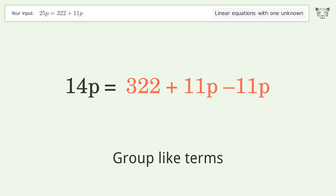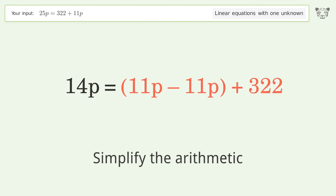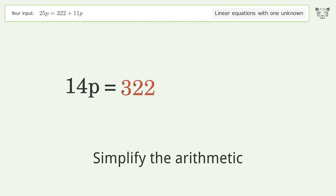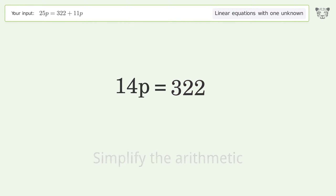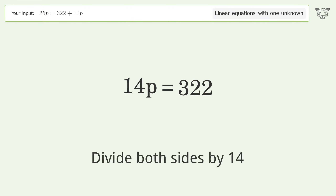Group like terms and simplify the arithmetic. Then isolate p by dividing both sides by 14.